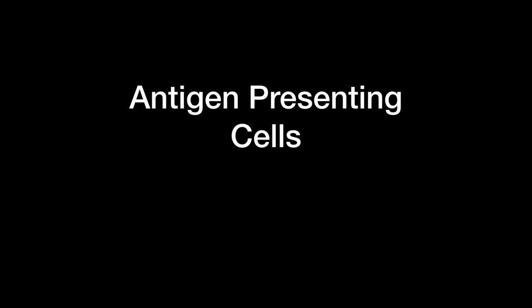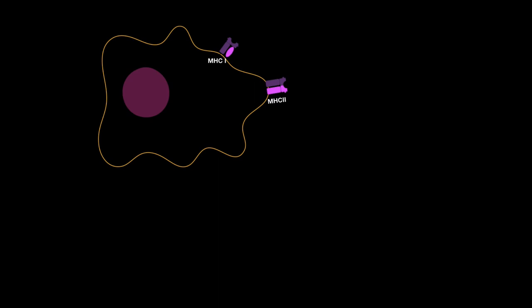Hello and welcome to another video. In this video I'm going to talk about the different antigen-presenting cells we have in our body — basically how they develop and their characteristics. What is an antigen-presenting cell? These cells can catch a microorganism and present them on either MHC1 or MHC2. What's special about these cells is that they can actually express what is called B7.